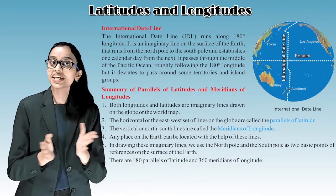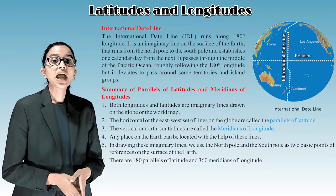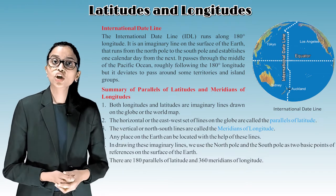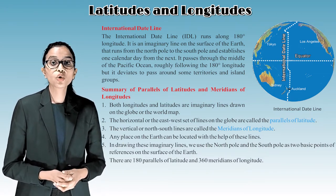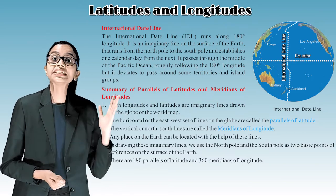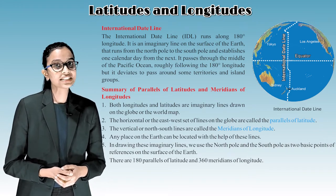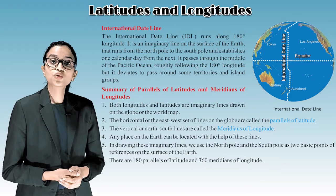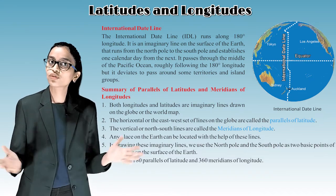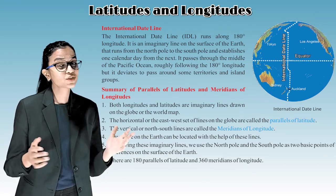Summary of parallels of latitude and meridians of longitude: First, both longitude and latitude are imaginary lines drawn on the globe or the world map. Second, the horizontal or east-west set of lines on the globe are called parallels of latitude. Third, the vertical or north-south lines are called meridians of longitude. Fourth, any place on the earth can be located with the help of these lines. Fifth, in drawing these imaginary lines, we use the North Pole and the South Pole as two basic points of reference. Sixth, there are 180 parallels of latitude and 360 meridians of longitude.